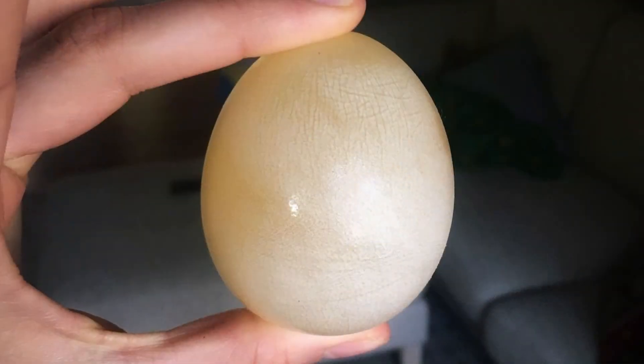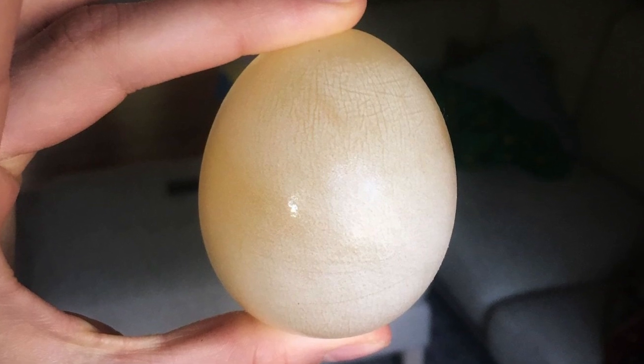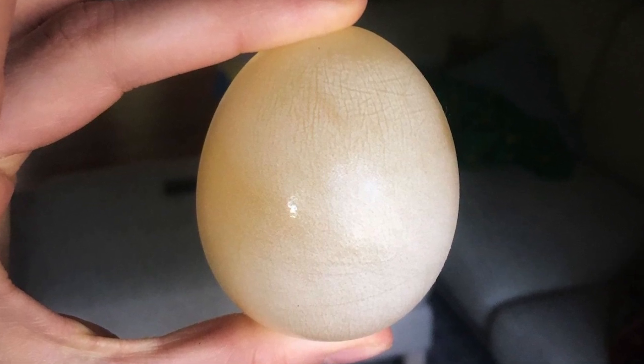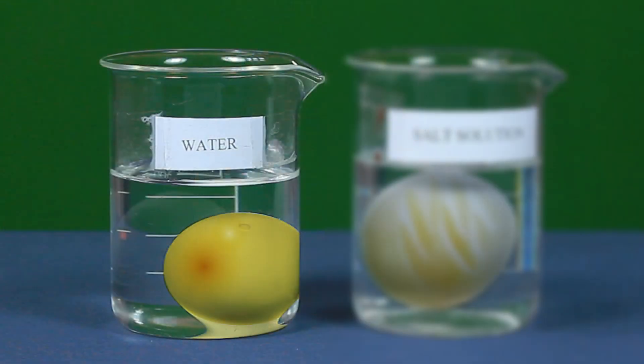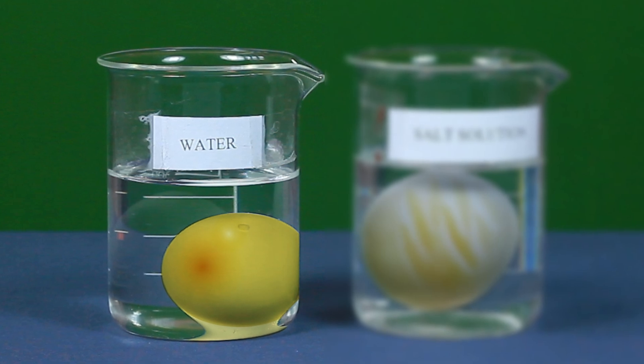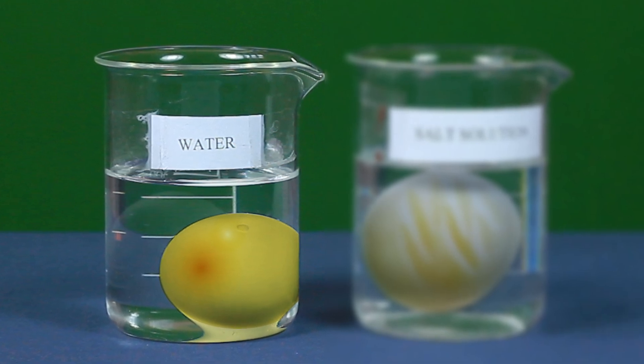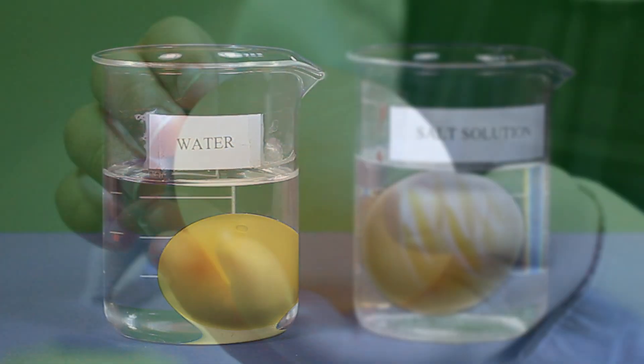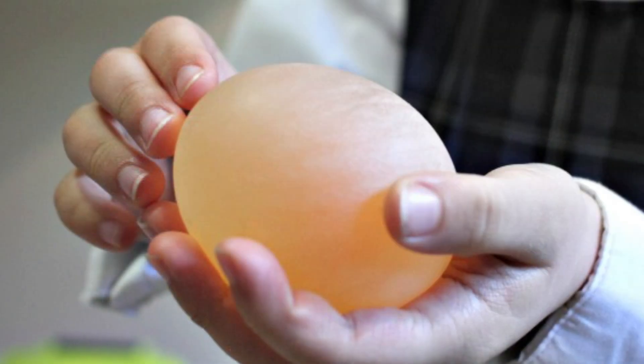The de-shelled egg when placed in water swells because the concentration of water molecules outside the egg is much higher than the concentration of water molecules inside the egg. As a result, endosmosis takes place and water from the beaker enters the egg.